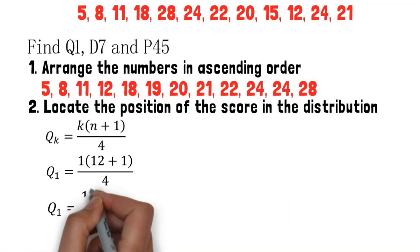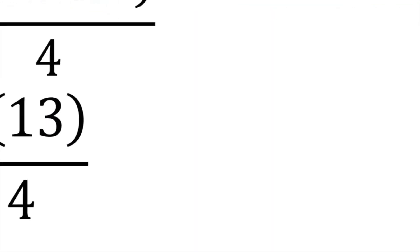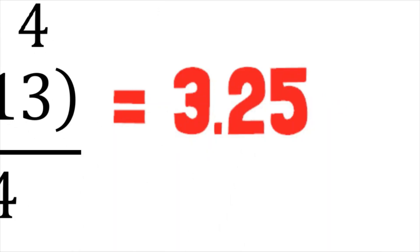12 plus 1 equals 13. That gives us Q sub 1 equals 1 times 13 divided by 4. 1 times 13 divided by 4 equals 3.25. That means the position of our Q1 lies on the 3.25th place of our distribution.